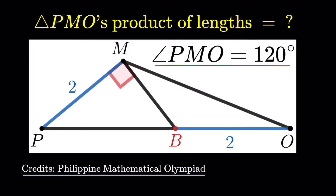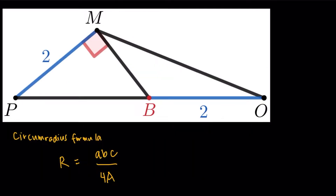Starting up with my solution: it is pretty interesting that we're asked about the product of the lengths of triangle PMO. If you do a lot of geometry questions, you would immediately realize that there is a nice formula involving the product of the lengths — the circumradius formula. The circumradius R equals the product of the side lengths ABC divided by 4 times the area of the triangle. So if I want to get the product of side lengths ABC, I just need 4 times the circumradius times the area.